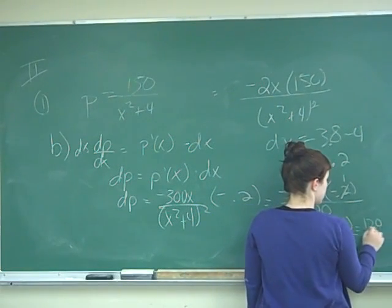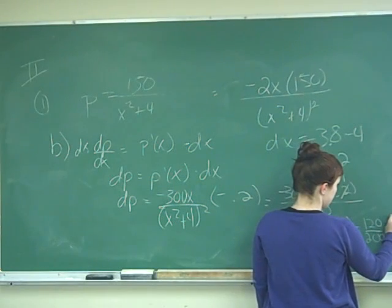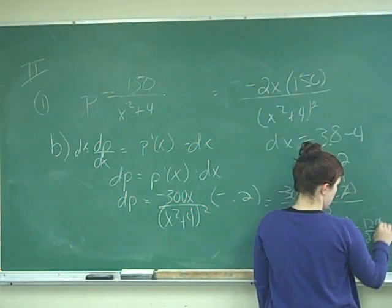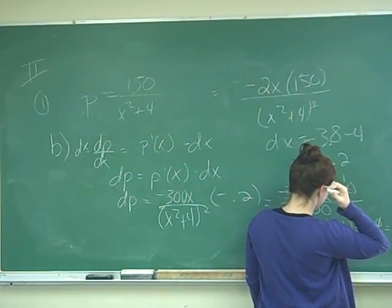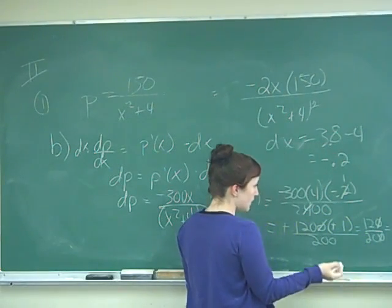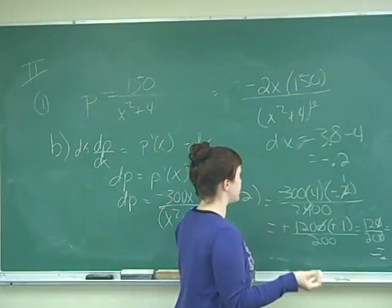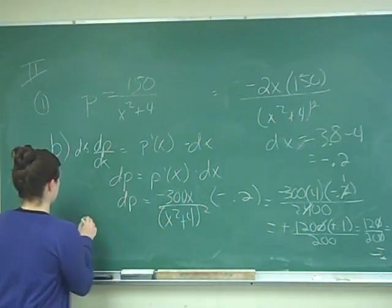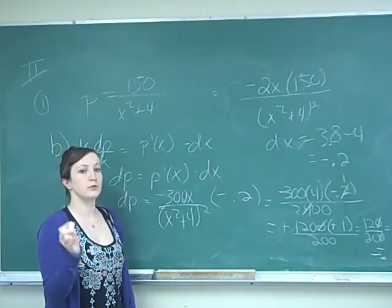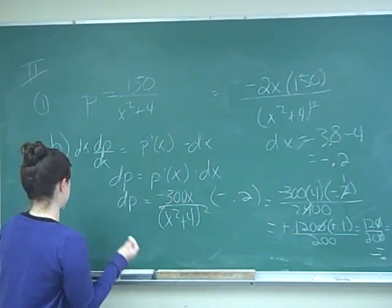I have 120 over 200, which is the same as 3 fifths. If we divide both by 2, that's 6 over 10, which is equivalent in money to 0.6, which is 60 cents. So if our bushels decrease by 0.2 million, then our price will increase by 60 cents.